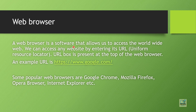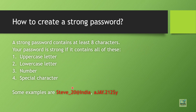A web browser is software that allows us to access the World Wide Web. We can access any website by entering its URL in the URL box at the top of the web browser. An example URL is https://www.google.com. HTTPS stands for HyperText Transfer Protocol Secured. Popular examples of web browsers include Google Chrome, Mozilla Firefox, Opera, and Internet Explorer.